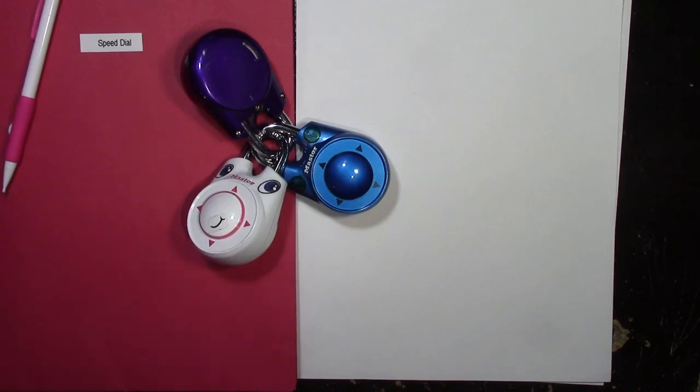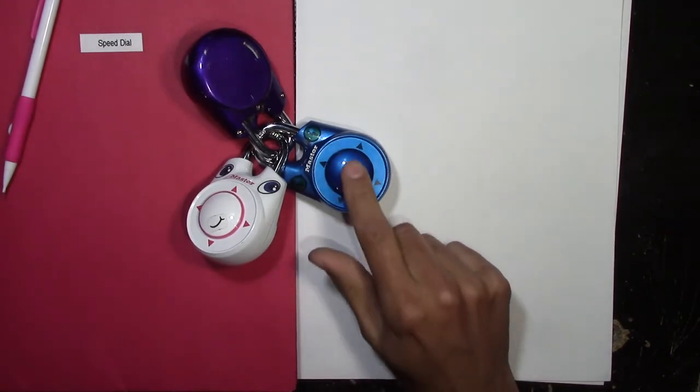So why do Master Lock speed dial style locks have 7,500 plus one possible internal states?